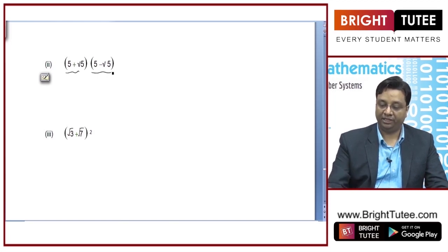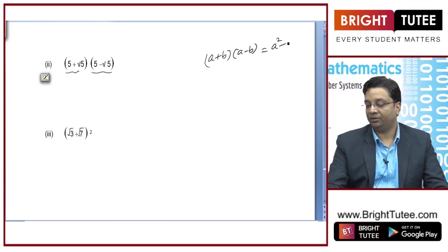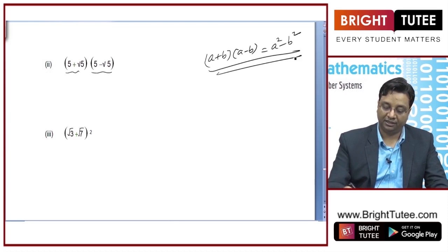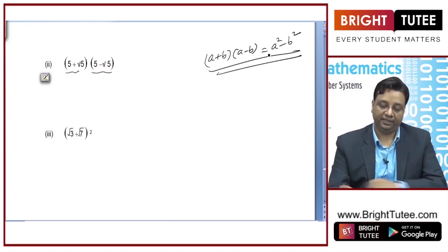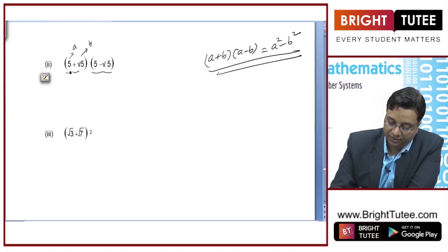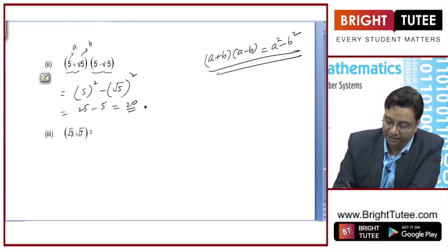This next expression is of the form (A + B)(A - B). We know that (A + B)(A - B) = A² - B², an algebraic identity learned in previous classes. So we use this identity here: let A = 5 and B = √5. Then A² - B² = 5² - (√5)² = 25 - 5 = 20. Hence the result is 20.